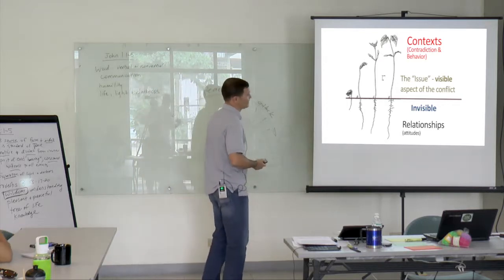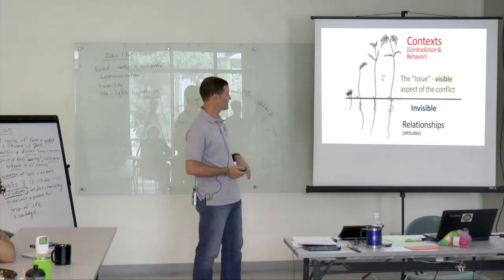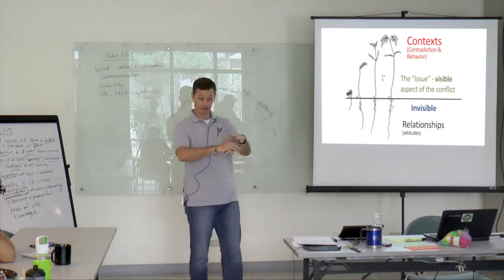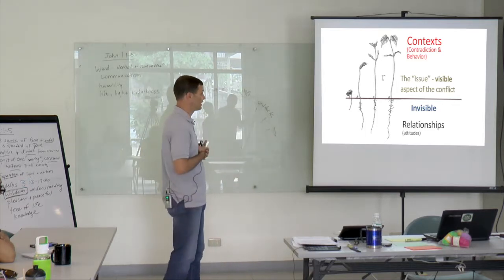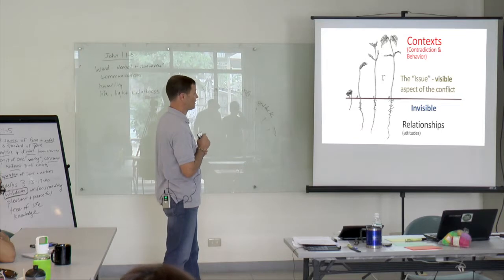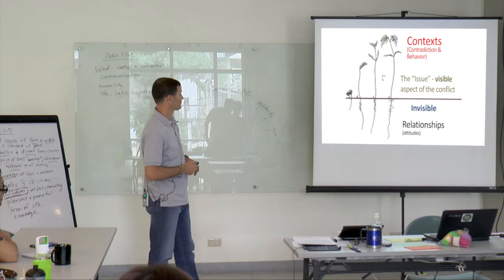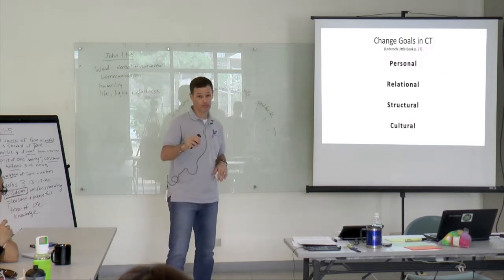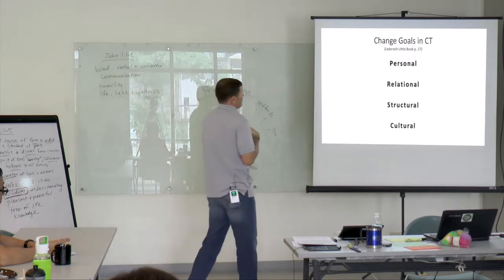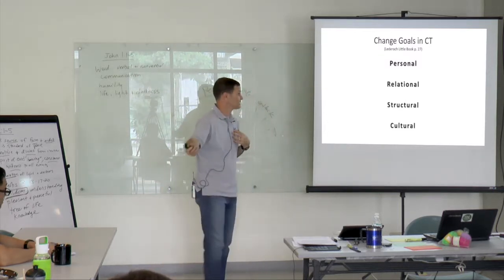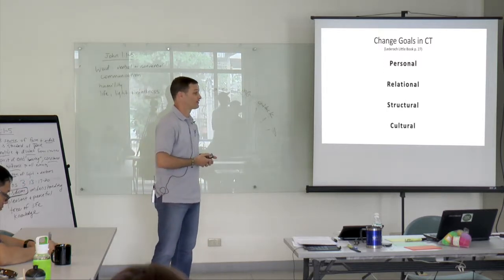So the context makes a big difference in how conflicts happen. And then the attitudes, the relationships. So conflict transformation says 'Yes, there is an issue here, but what's underneath it? What are the relationships? How is it affecting our relationships together? And what is the wider context for this?' And that can be not just personal, it can be relational - so it can be something within myself. It can also be between us. It can be structural and it can be cultural. So these are all part of the bigger picture of conflict transformation.